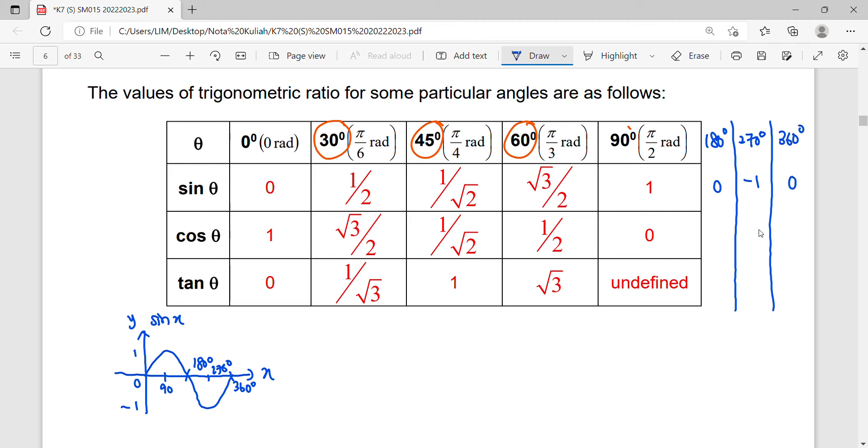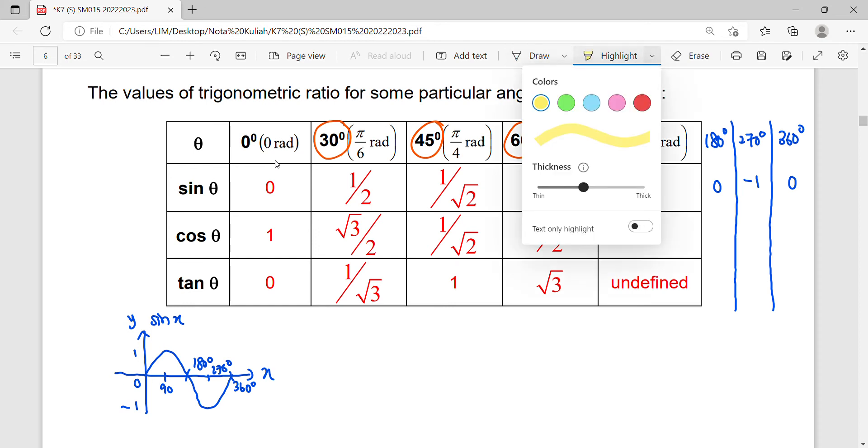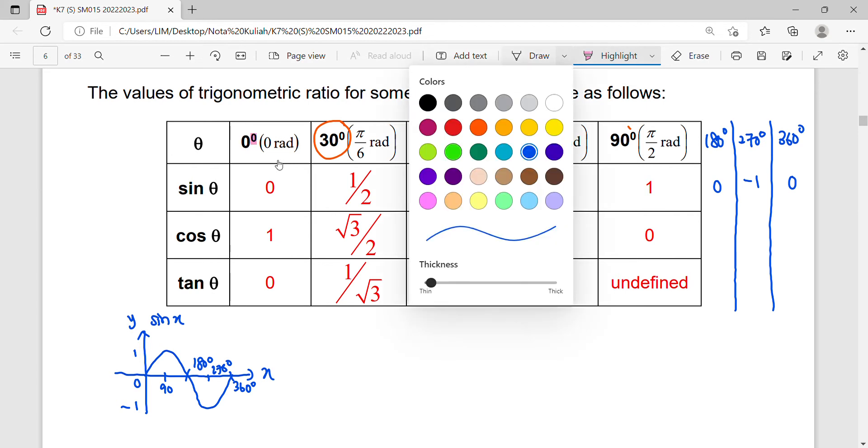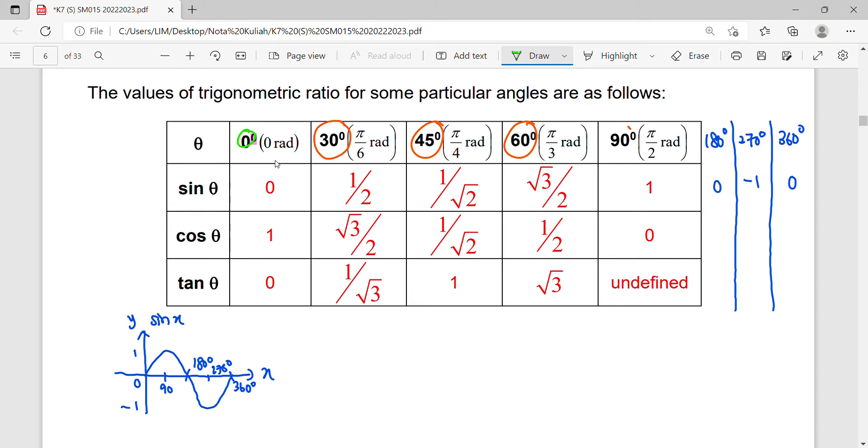So these angles have special values. If you have the special values of 0, 90 degrees, 180, 270, and 360, you can see the values: zero, one, zero, negative one, zero.